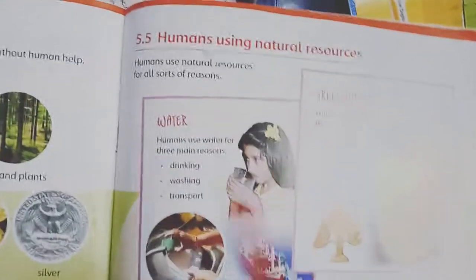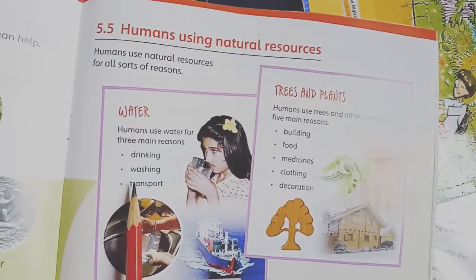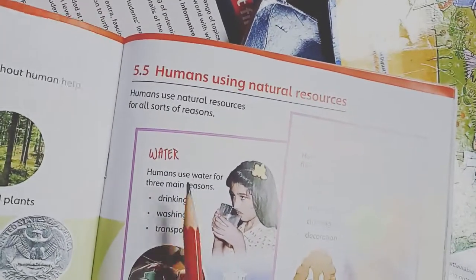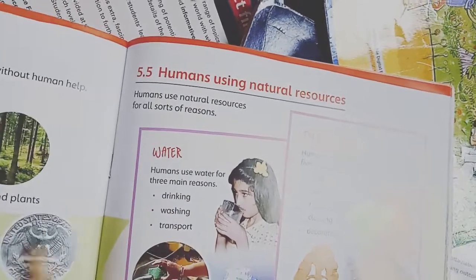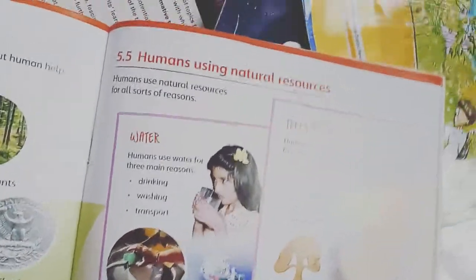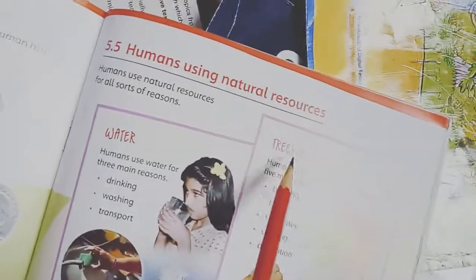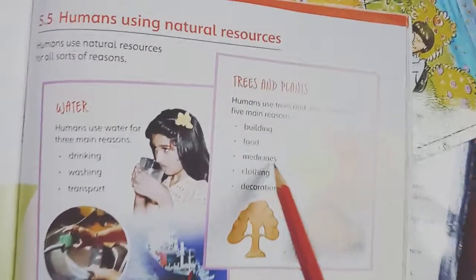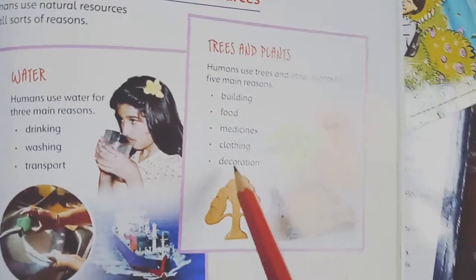Now on page number 39, we look at how human beings are using natural resources. First, water — humans use water for three main purposes: drinking, washing, and transport. Second, plants — human beings use plants for five main purposes: building houses, for food, for making medicine, for clothing, and for decoration.